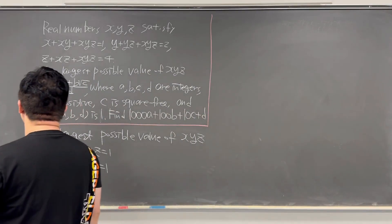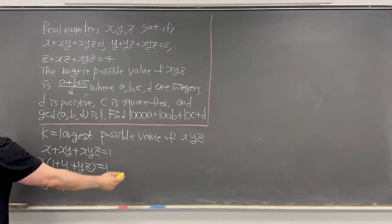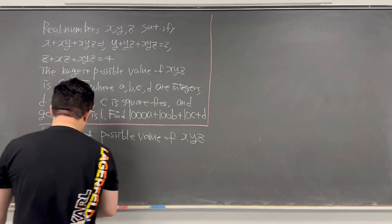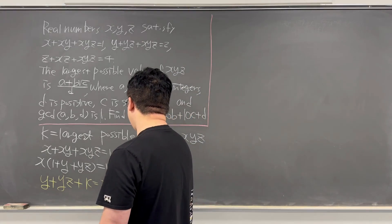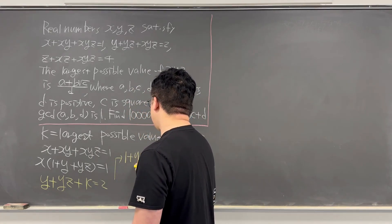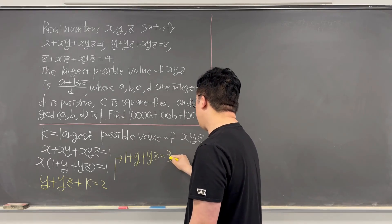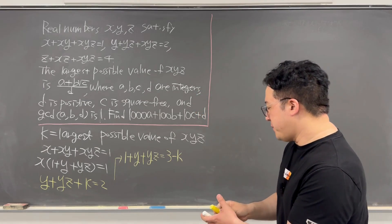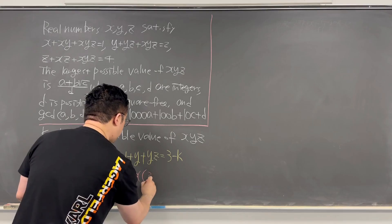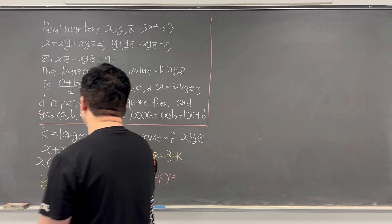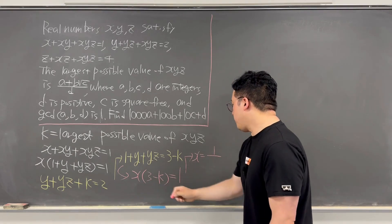Starting with the first condition x + xy + xyz = 1, if you factor x out, we have x times (1 + y + yz) = 1. Using the second condition y + yz + xyz = 2, we can rewrite it as y(1 + z) + K = 2. Subtracting K and adding 1 to both sides gives (1 + y + yz) = 3 - K. So x times (3 - K) = 1, meaning x = 1 / (3 - K).